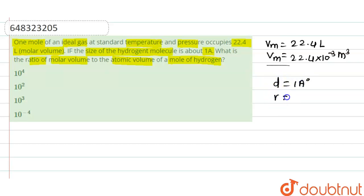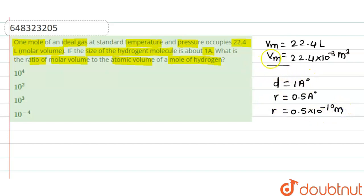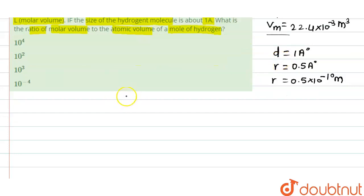We have been given the size of the hydrogen molecule as one angstrom unit. Size here means diameter, so the radius will be 0.5 angstrom unit, which we can write as 0.5 into 10 to the power minus 10 meter. This is the radius of one hydrogen molecule. Now we can calculate the atomic volume for one mole of hydrogen.